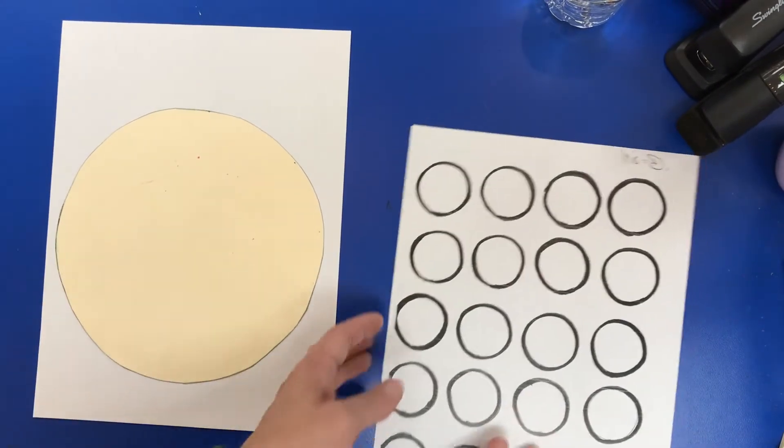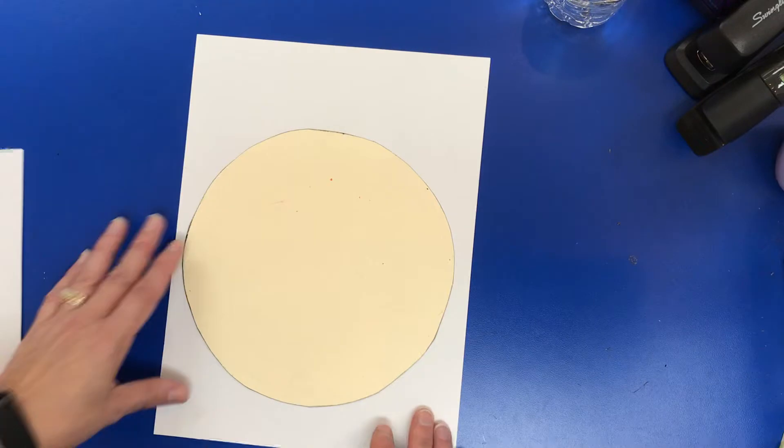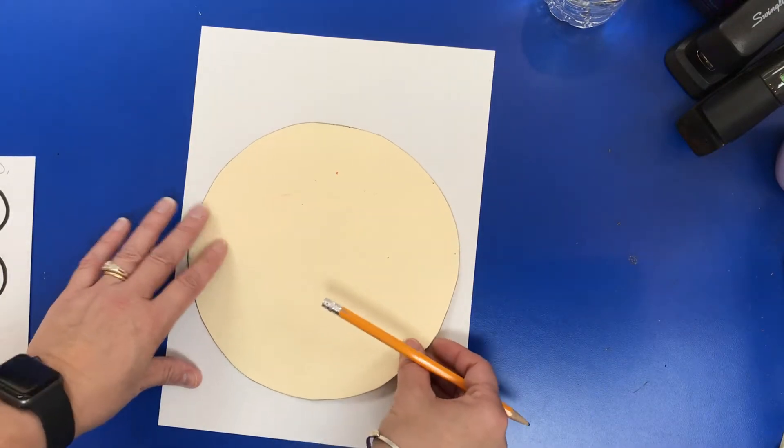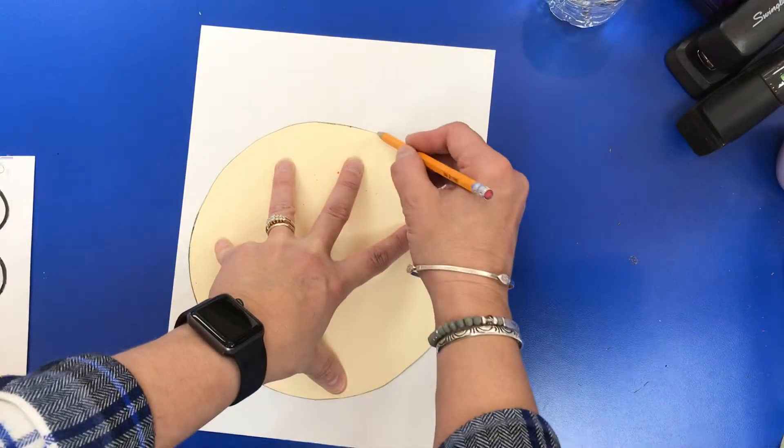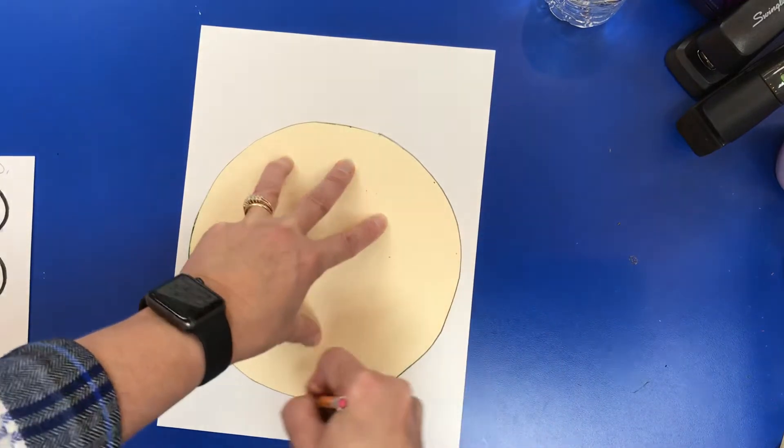Then take the circle and trace the circle on your paper.